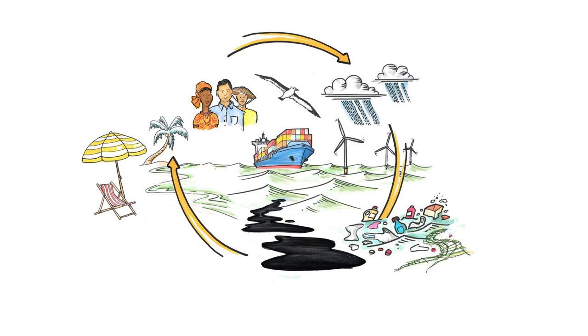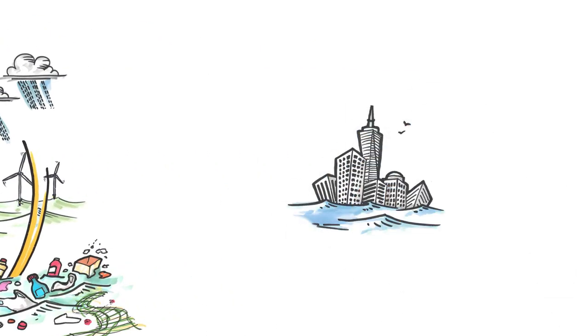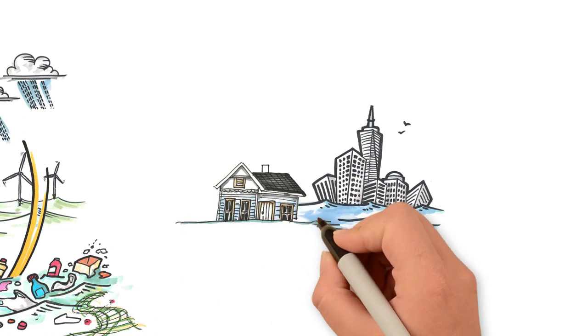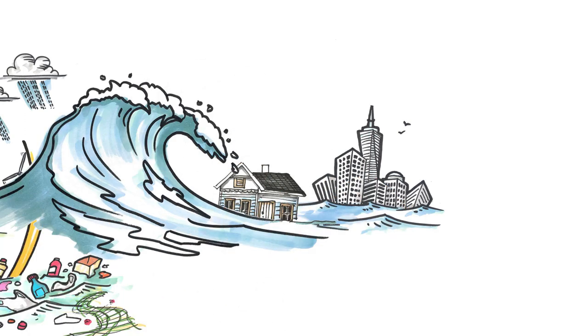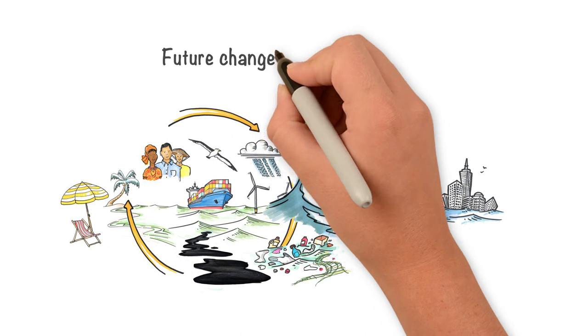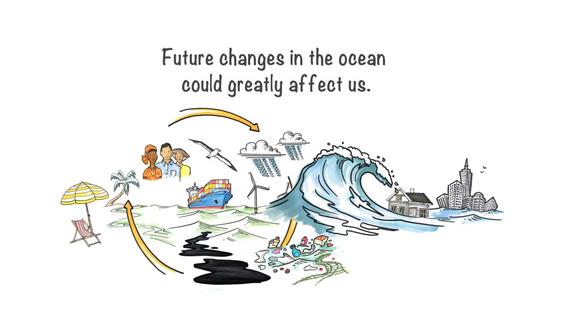The ocean can also harm us. Storm surges can flood cities, and tsunamis can destroy entire coastlines. Future changes in the ocean could greatly affect us.